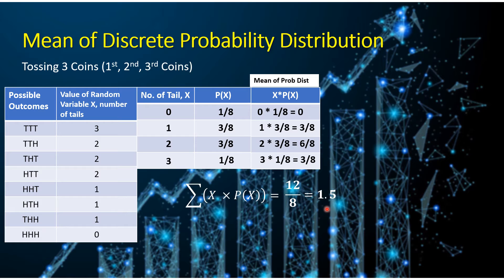This value tells us that in tossing 3 coins, you can expect that there will be 1.5 tails. Now, since there's no such thing as 1.5 tails, it tells us that it could be either 1 or 2 tails that may appear if you toss the 3 coins — because this value is exactly at the middle of 1 and 2. Unless there are values like 1.7 or 1.8, you can round it off to 2, or values like 1.3 or 1.2, you round it off to 1. So that is the purpose of identifying the mean of the probability distribution — for you to know what value you could expect for your random variable.